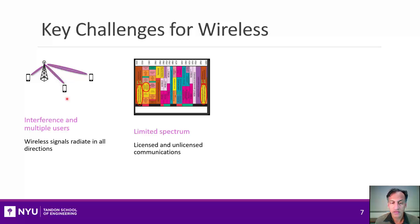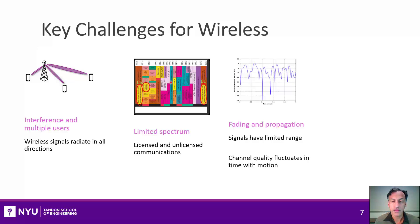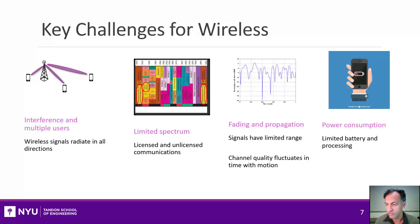Closely related to this is that wireless transmissions must be contained within spectrum — both licensed and unlicensed — and that spectrum has become very congested, so we need to use it efficiently. Another problem unique to wireless is fading. Unlike communication over a wire, which is generally very stable, wireless channels tend to fluctuate very rapidly, particularly when there's motion of the transmitter, receiver, or obstacles in the environment. Finally, many wireless devices operate in handheld form factors and are therefore limited in battery and processing — aspects not present in standard wired communications.